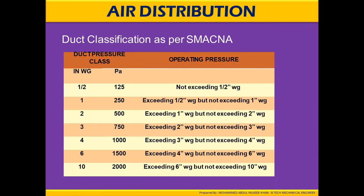Duct classification as per SMACNA is given in inches of water gauge and in Pascals, with operating pressures defined accordingly. For example, if the static pressure is 125 Pascals — which is half inch of water gauge — the operating pressure should not exceed half an inch of water gauge.